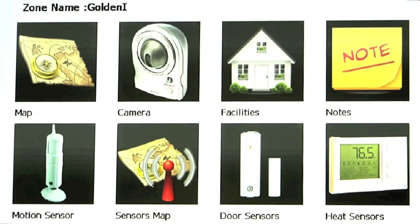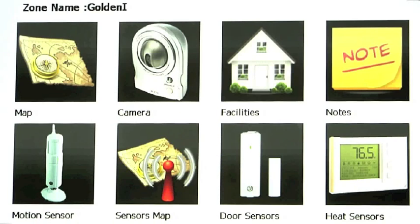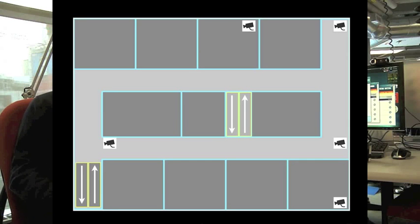What we are doing in this project is to understand the situational information around an agent — such as their location, their preferences, and sensor information about a particular building or area — and make the information more customized and relevant based on where they are and the type of operation they are involved with.